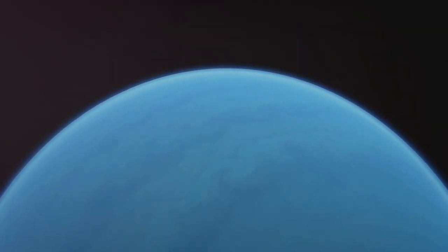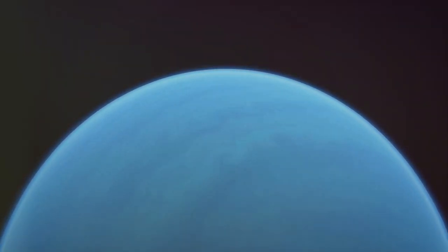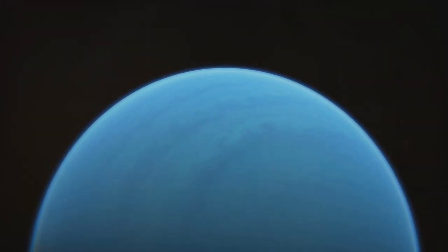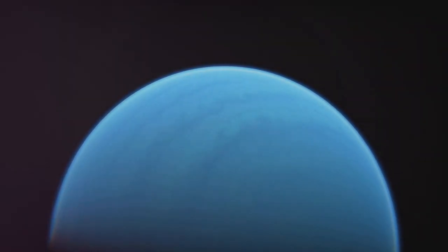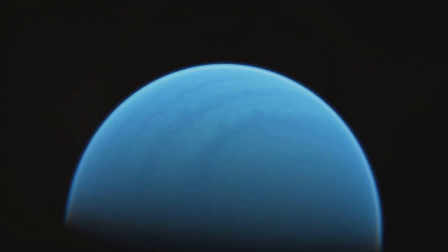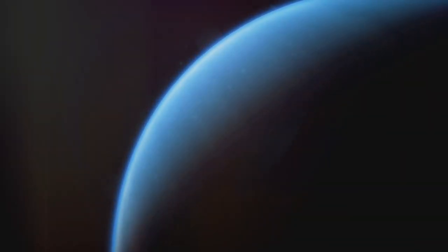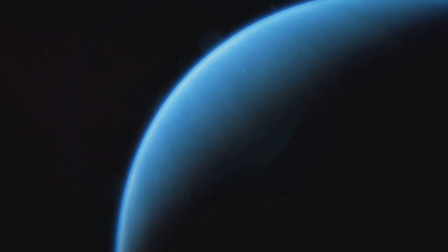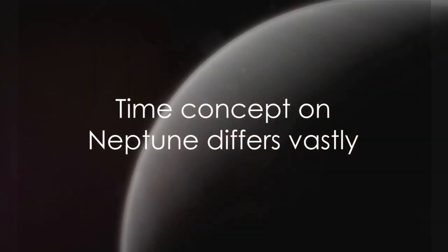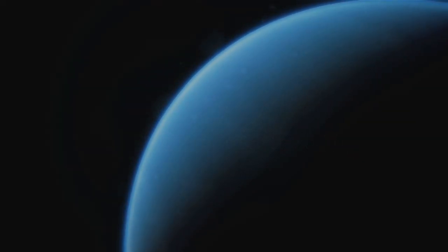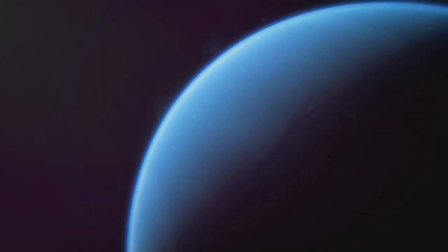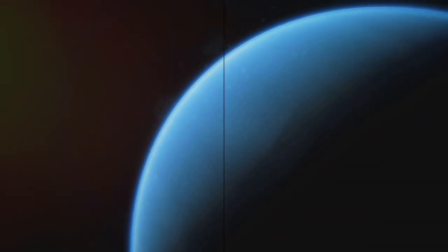This tilt results in prolonged seasons, much like we have on Earth, but with a far more extreme duration. These unique aspects of Neptune's orbit and rotation create a dynamic and fascinating world, albeit one that operates on a timescale vastly different from ours. With a year that lasts 165 Earth years and seasons that span over four decades, time on Neptune is a concept far removed from our Earthly understanding.